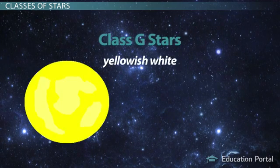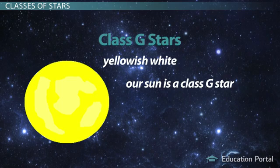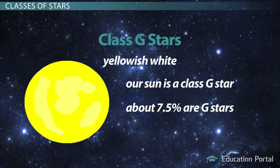Class G stars are yellowish-white. Our sun is a Class G star. These stars are more common, about 7.5% of stars.